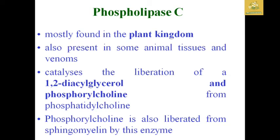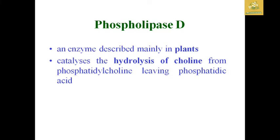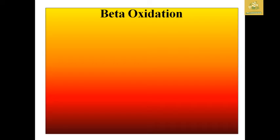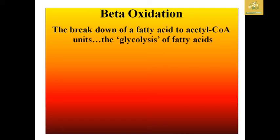Phospholipase C is mainly found in the plant kingdom and is also present in some animal tissues and venoms. It catalyzes the production of 1,2-diacylglycerol and phosphorylcholine from phospholipids; phosphorylcholine is also liberated from sphingomyelin by this enzyme. Phospholipase D is mainly present in plants and catalyzes the hydrolysis of choline from phosphorylcholine, leaving phosphatidic acid as the product.